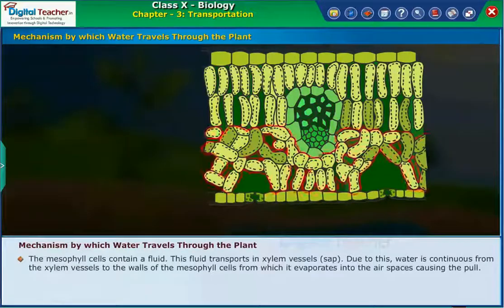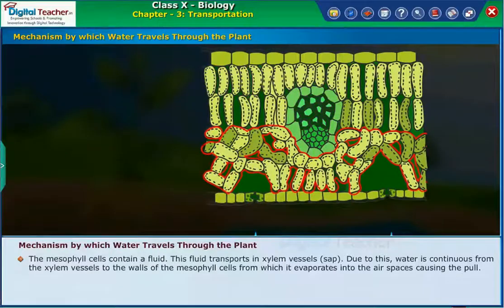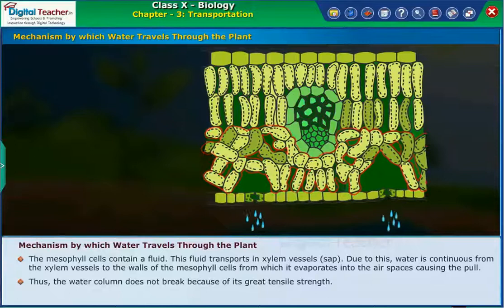The mesophyll cells contain a fluid. This fluid, called sap, transports in xylem vessels. Due to this, water is continuous from the xylem vessels to the walls of the mesophyll cells, from which it evaporates into the air spaces, causing the pull. Thus, the water column does not break because of its great tensile strength.